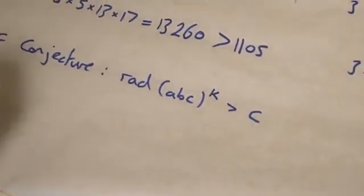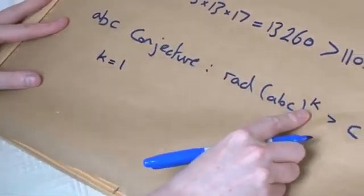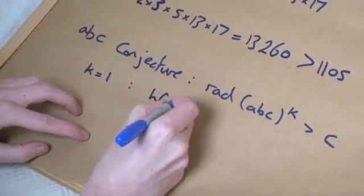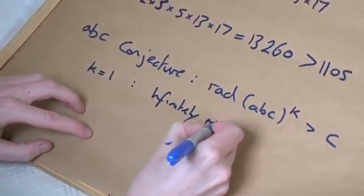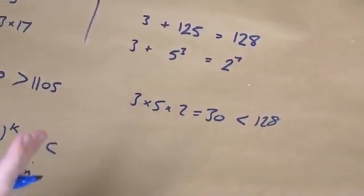But there are exceptions. And these are the exceptions. When k equals 1, that's the power is 1, there are infinitely many exceptions. Just like the one I've just shown you there. Infinitely many.